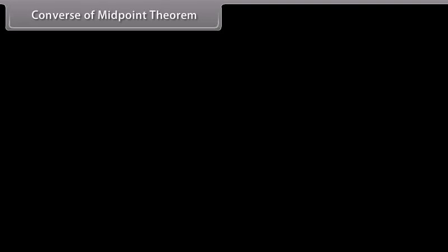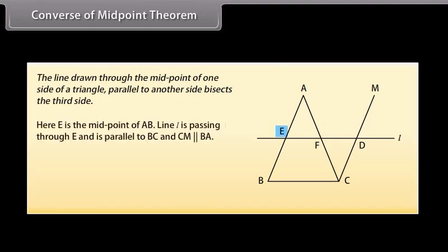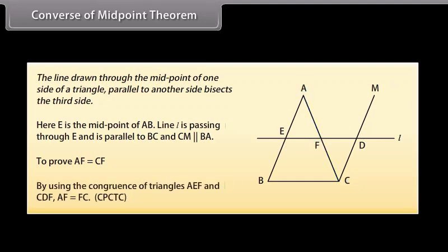Converse of the midpoint theorem: The line drawn through the midpoint of one side of a triangle parallel to another side bisects the third side. Here E is the midpoint of AB, line L passes through E and is parallel to BC, and CM is parallel to BA. We have to prove that AF = CF. By using the congruence of triangles AEF and CDF, we can prove that AF = FC.